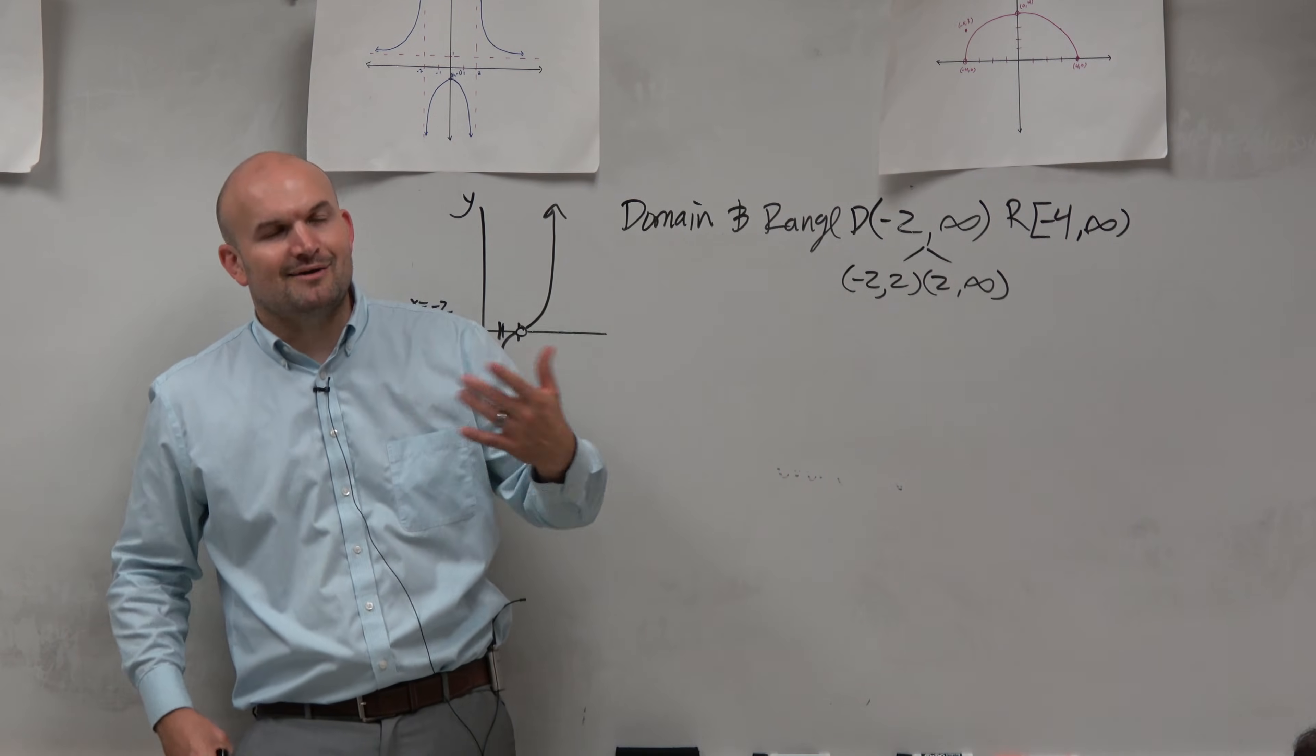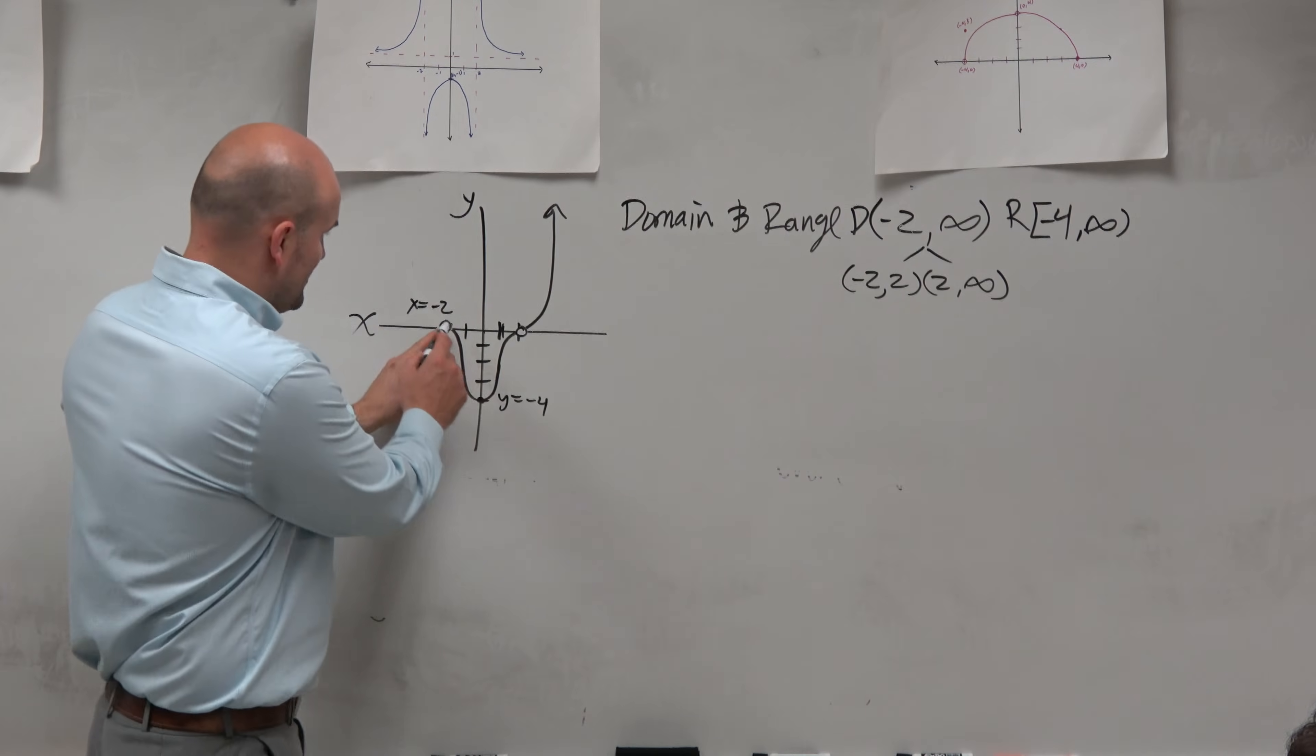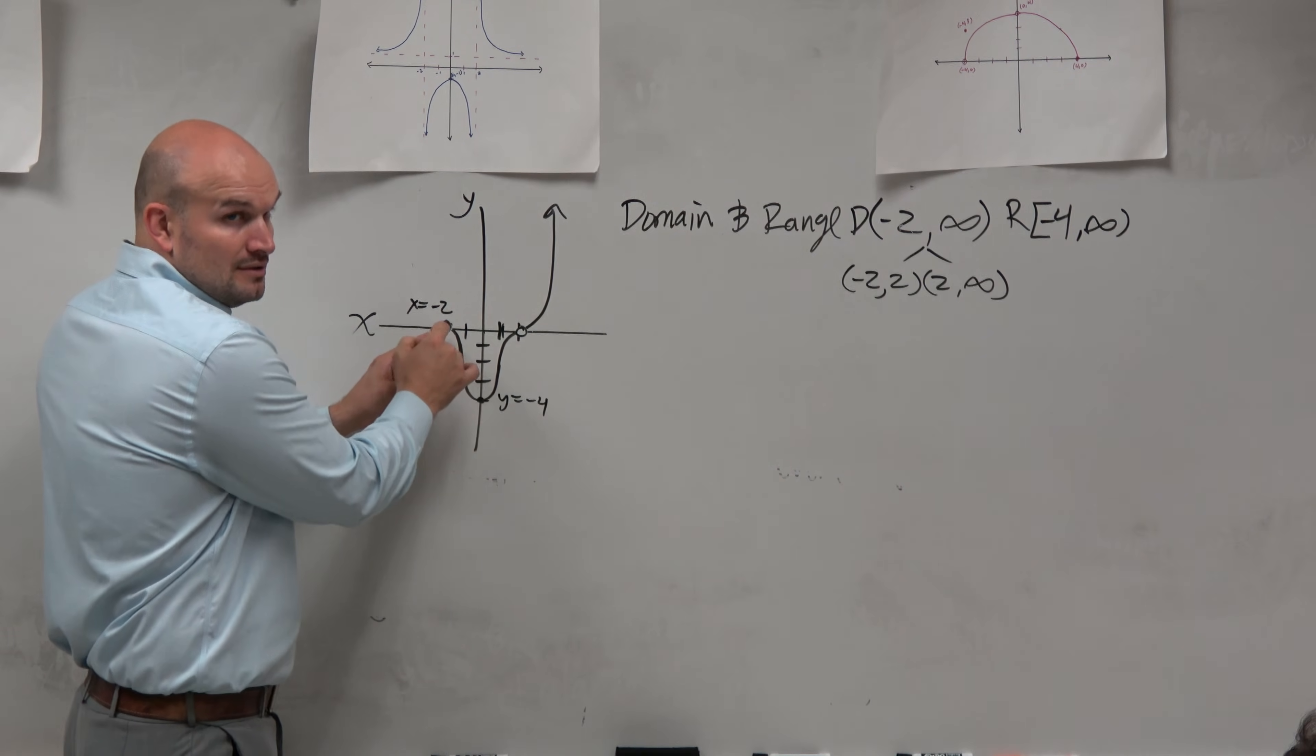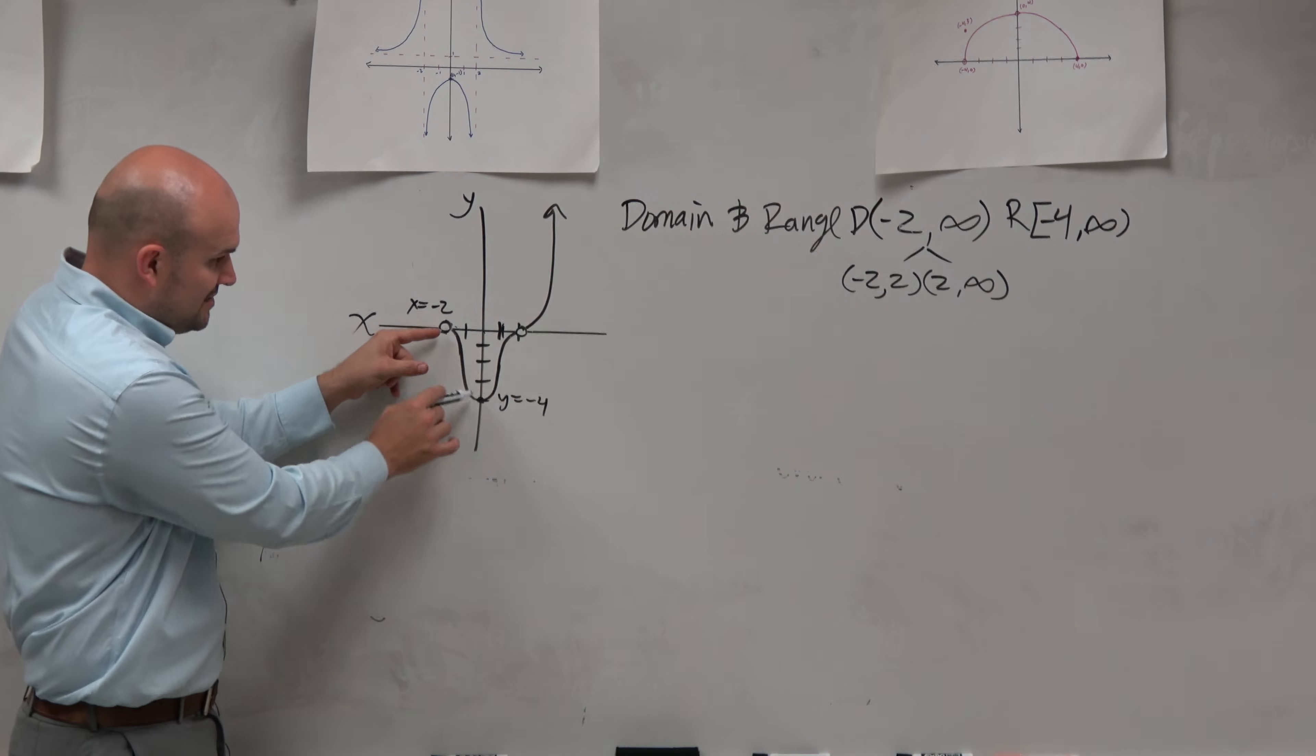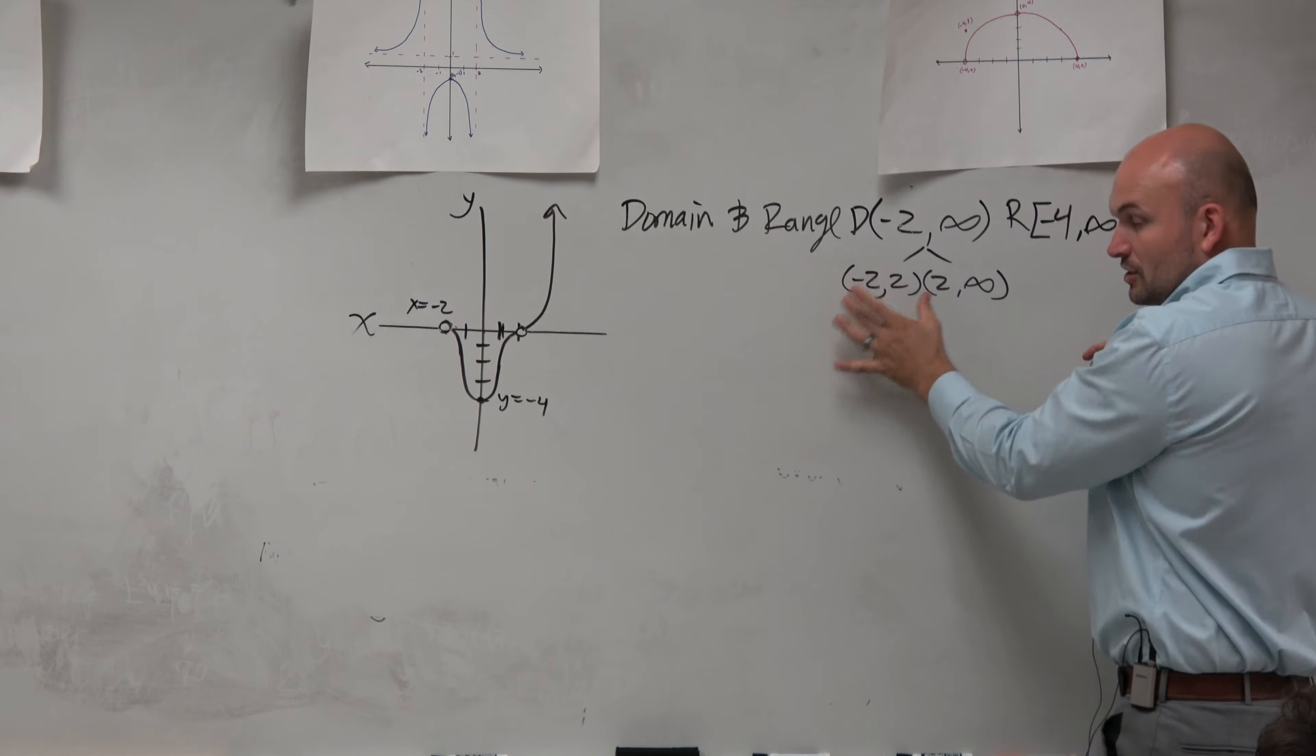Is the x values defined for negative 2 to 2? Do we have all the x values between negative 2 and 2? Yes. We're good. Between negative 2 and 2, we have all this graph is made up of all these x values. We're good. But negative 2 is not defined, parentheses, and 2 is not defined. So that's why they're in parentheses.